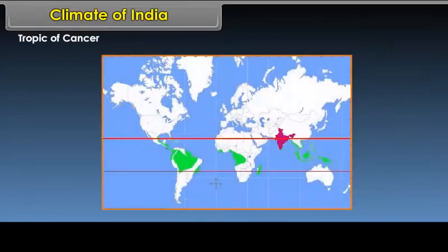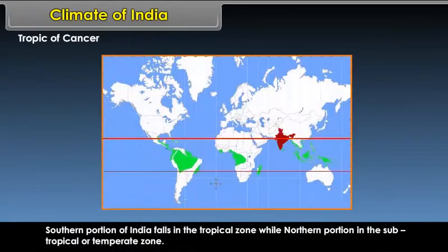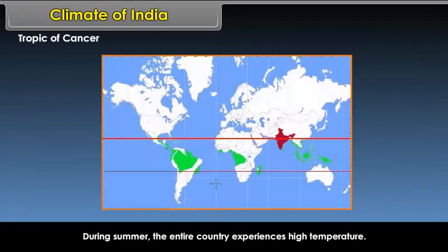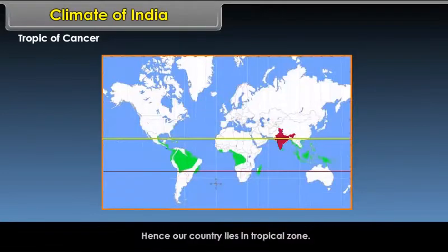Tropic of Cancer passes through the middle of the country, dividing it almost into two halves. The southern portion of India falls in the tropical zone while the northern portion falls in the subtropical or temperate zone. During summer, the entire country experiences high temperature. During winter, the southern portion remains warm and moderate, while some parts of the Himalayan region experience temperature below freezing point.